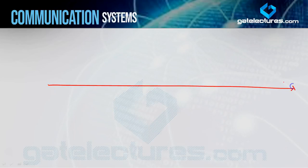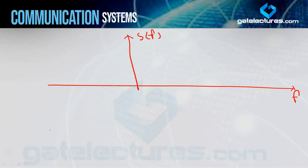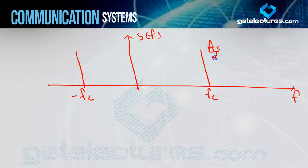The graph is S(f) versus f — S(f) amplitude axis, f is frequency axis. यहाँ पर first term है Ac·cos(ωc·t), means cos के साथ amplitude Ac है। तो plus frequency पर एक impulse draw करते हैं +fc, और minus frequency पर −fc, और amplitude divided by 2 — so Ac/2 and Ac/2.